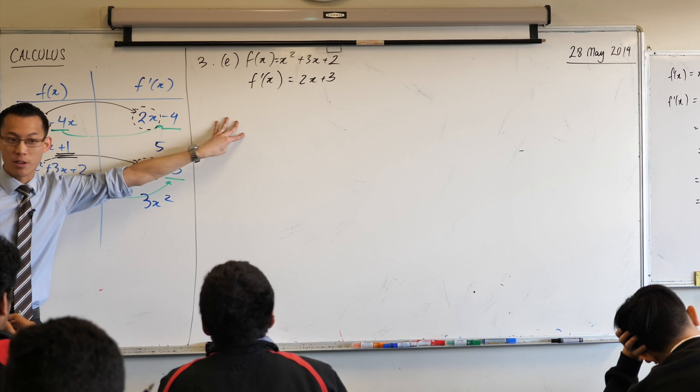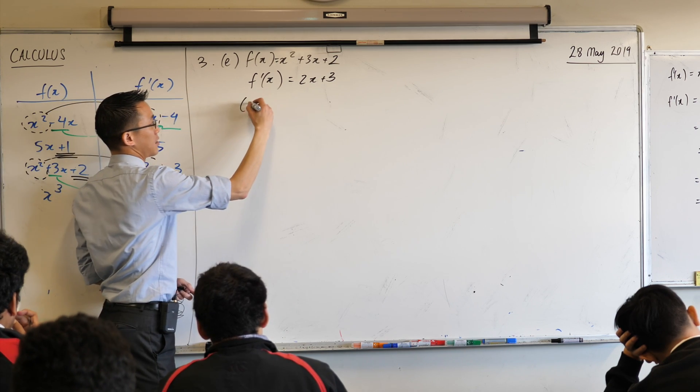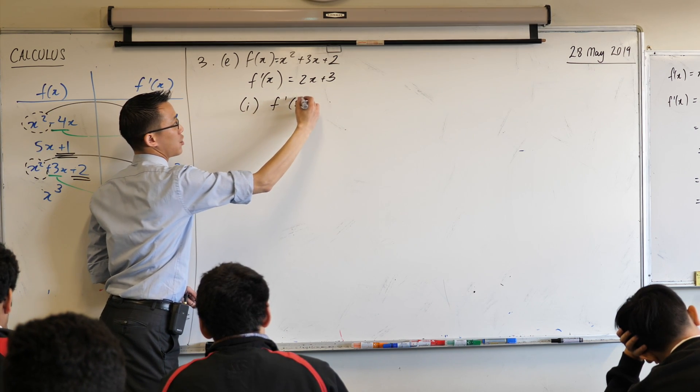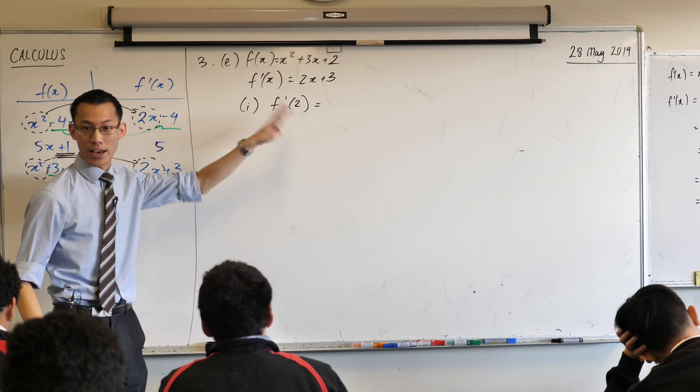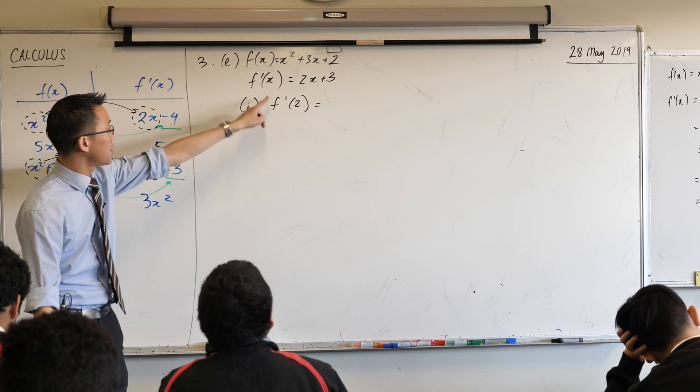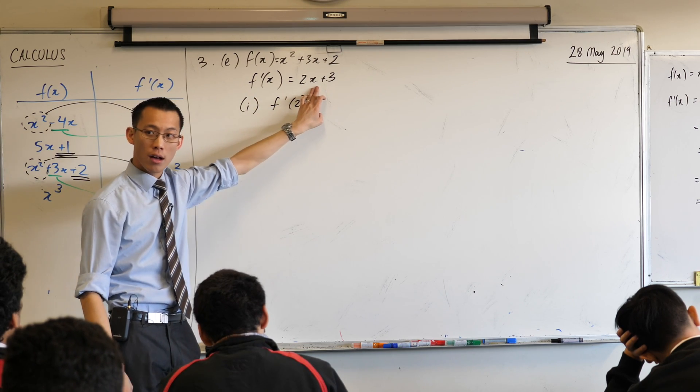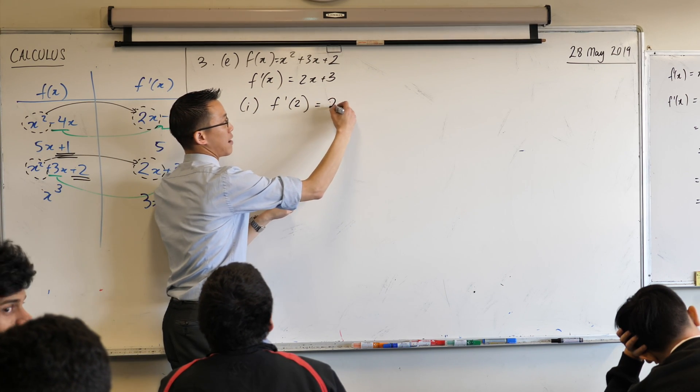So the reason why we use this notation is because I can deal with this just like any other function. So part 1 says, what is f dash 2? Okay, first let's evaluate it, and then let's think about what does that even mean. This here is f dash x, so f dash 2 means wherever you saw an x, replace it with a 2.